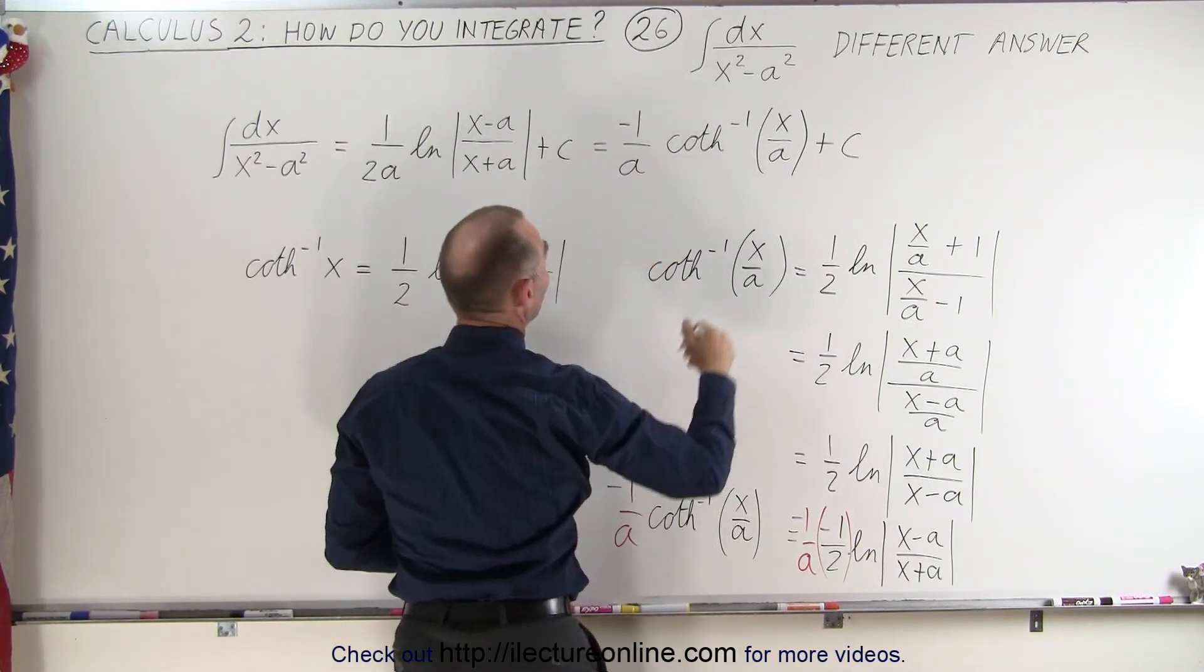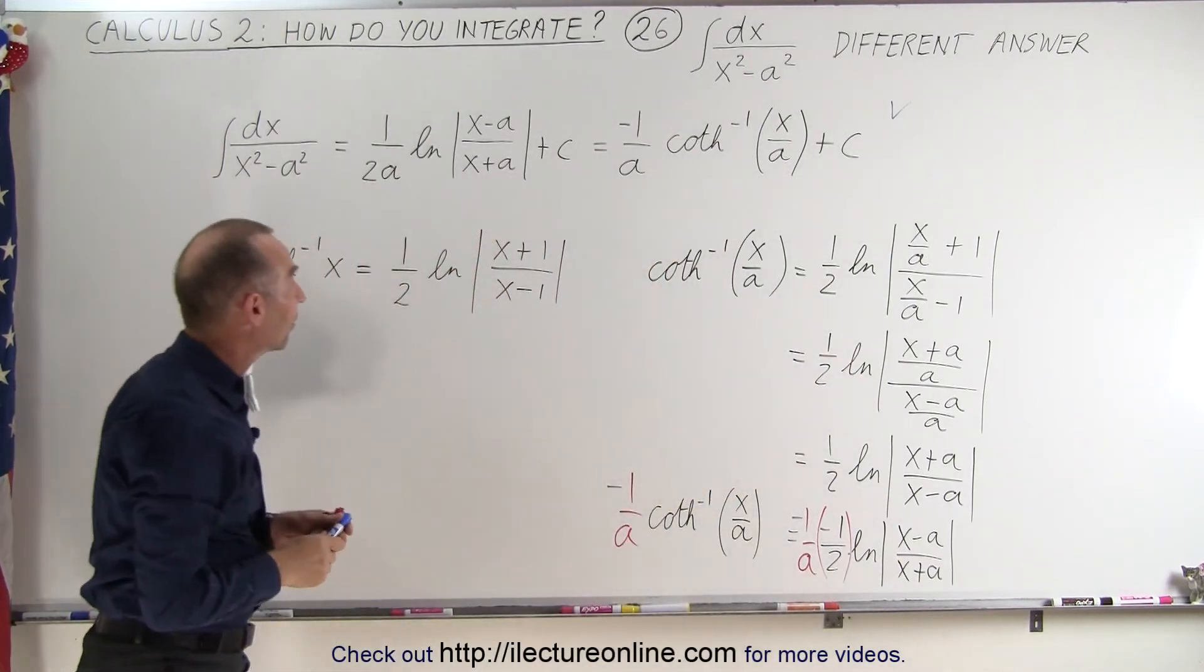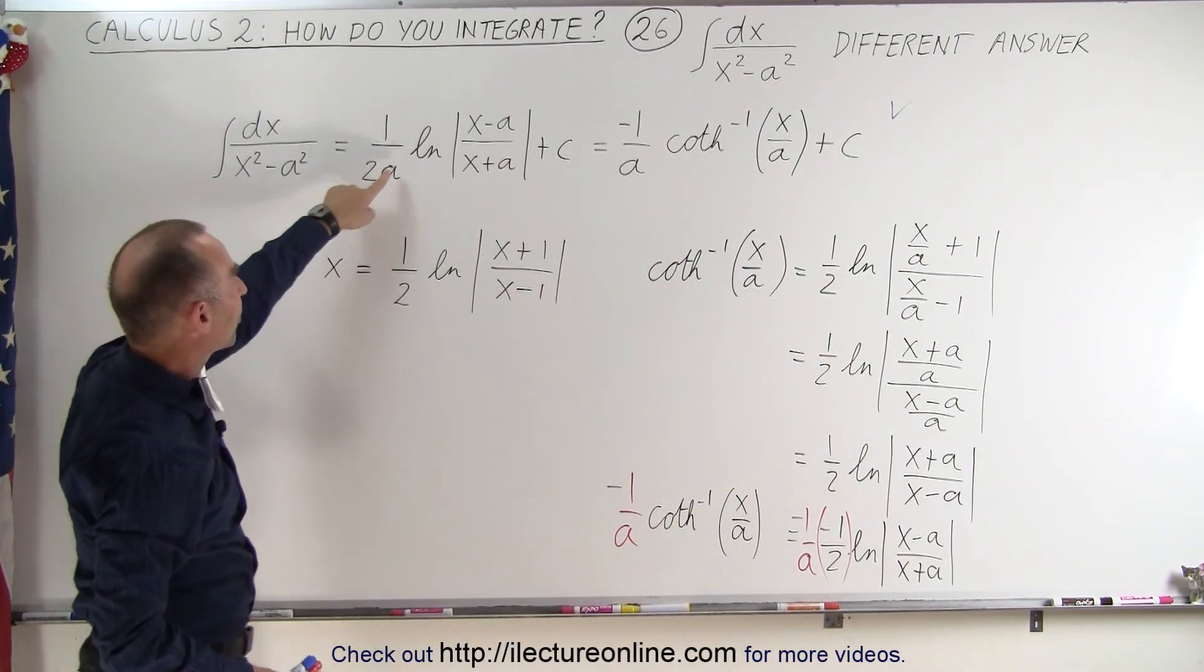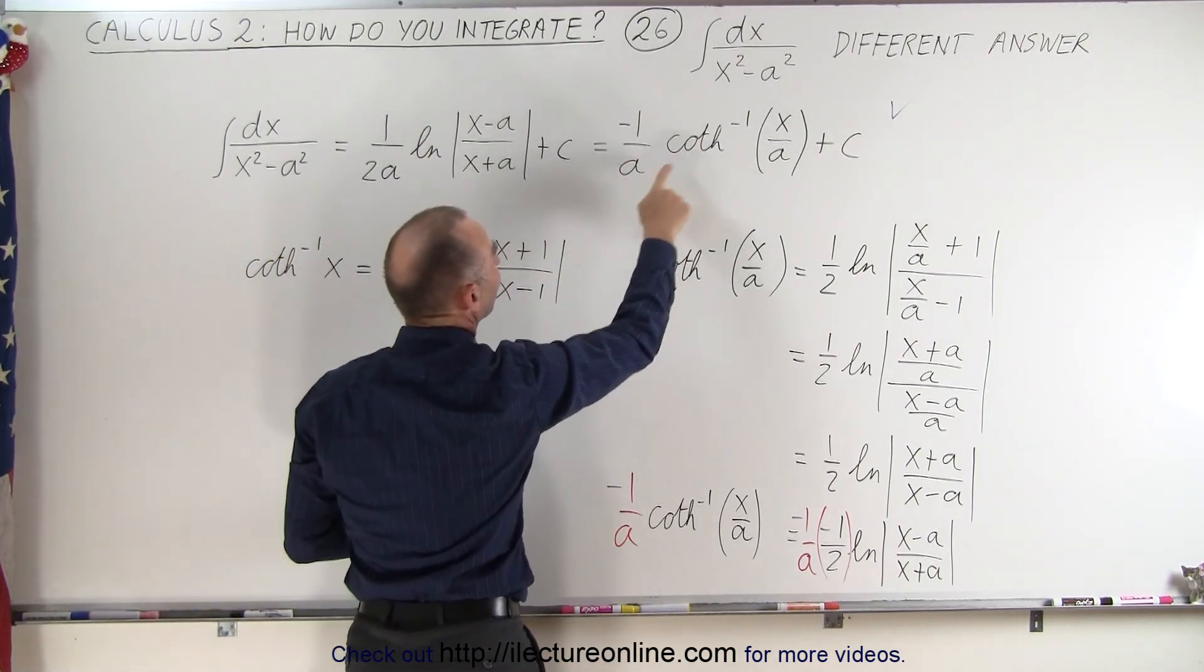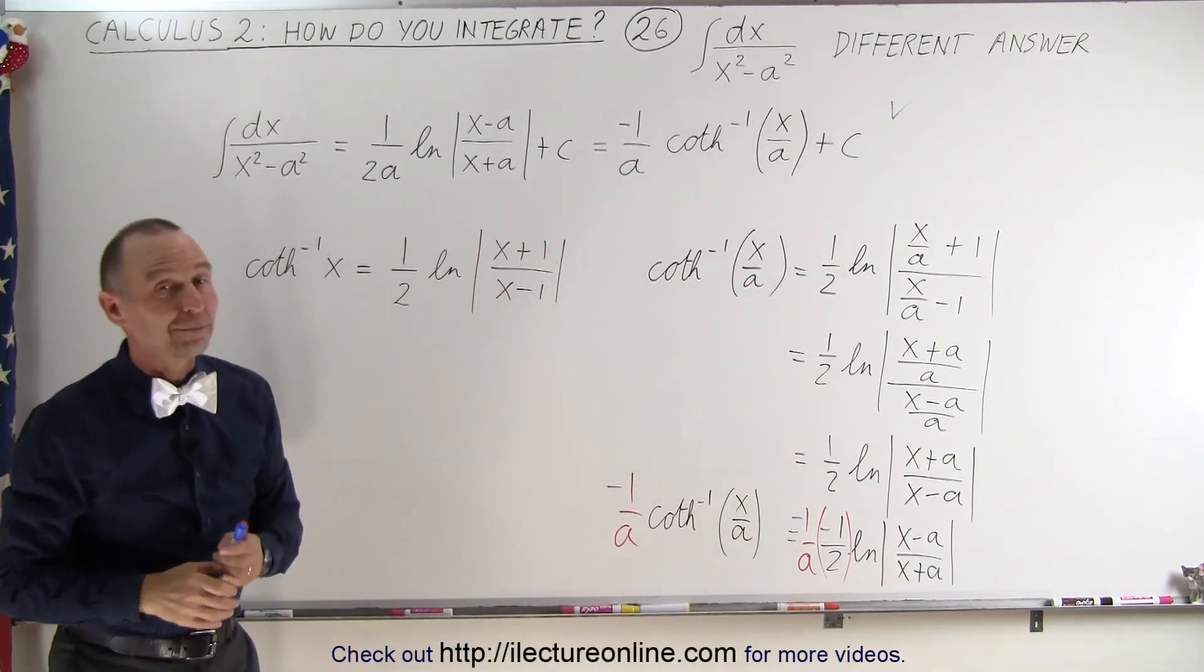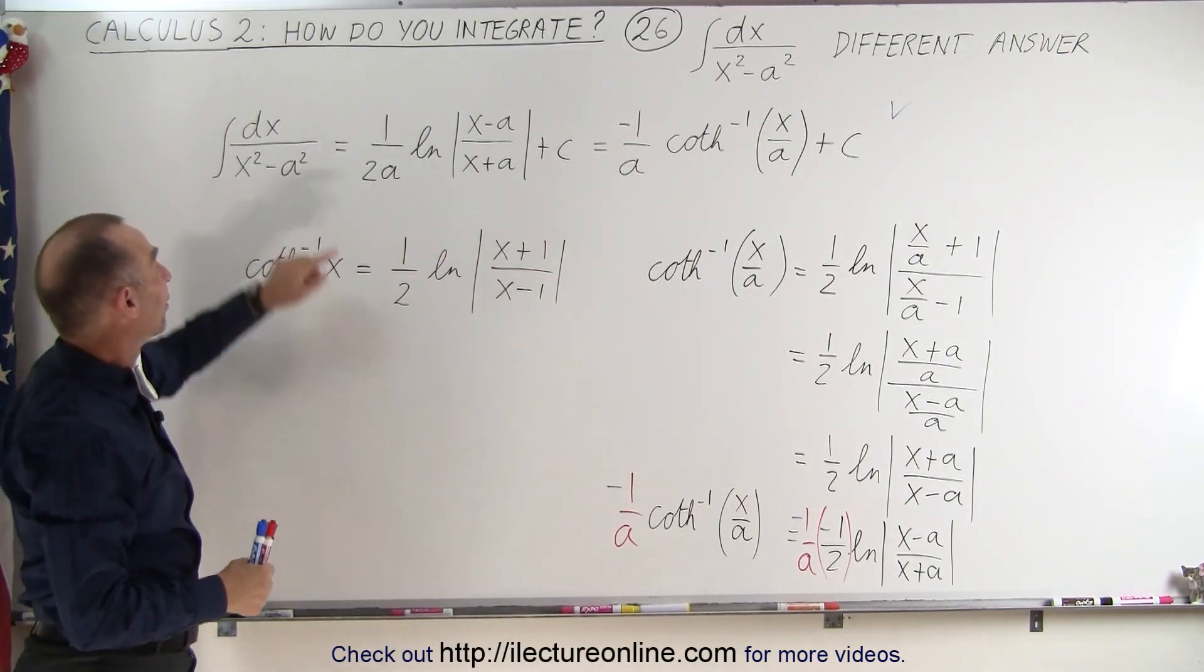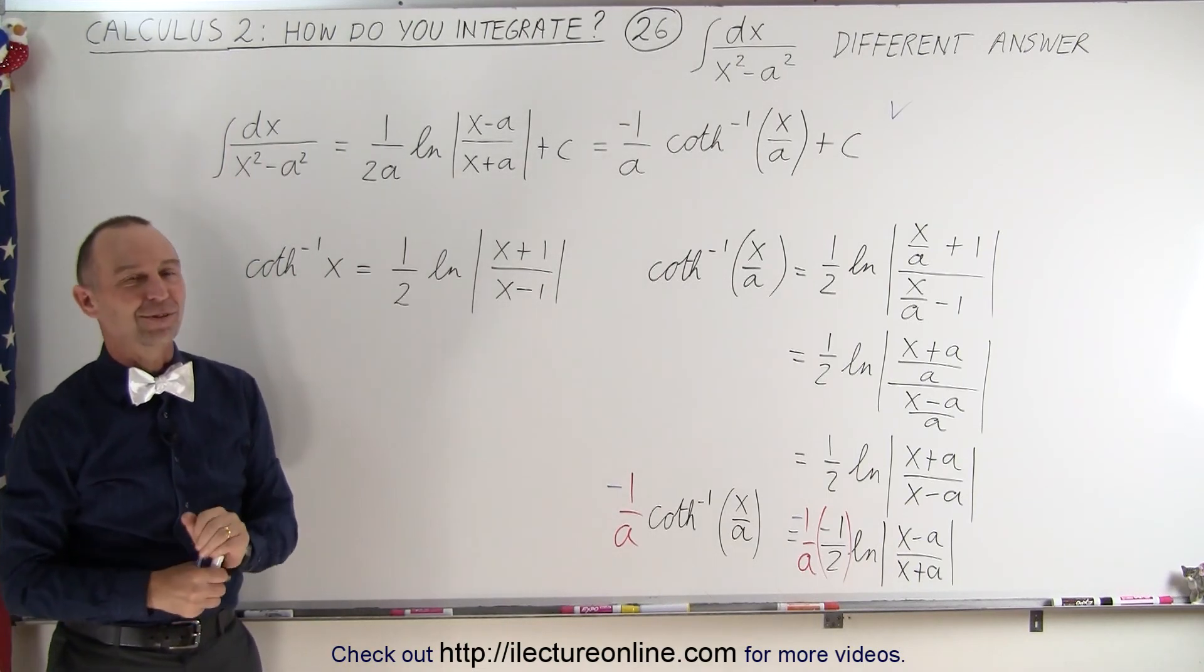So we can say that 1 over 2a times the natural log of x minus a over x plus a is the same as minus 1 over a times the inverse hyperbolic cotangent of x over a. So you can see that both of those answers are indeed the result of the integral of dx over x squared minus a squared. That's how it's done.